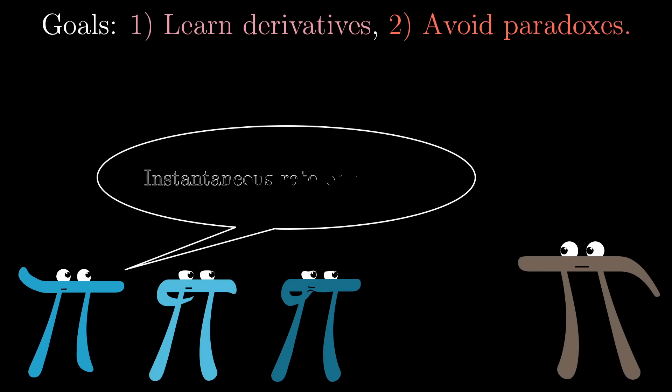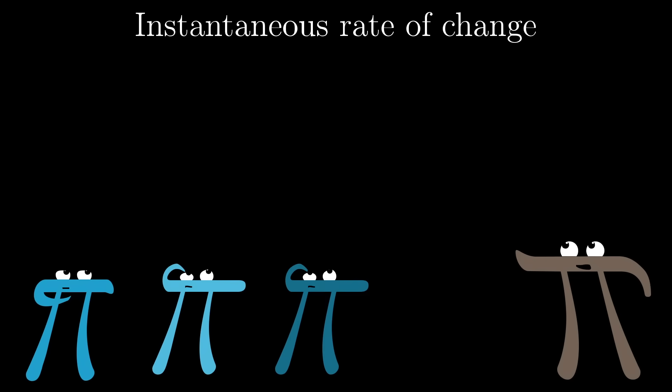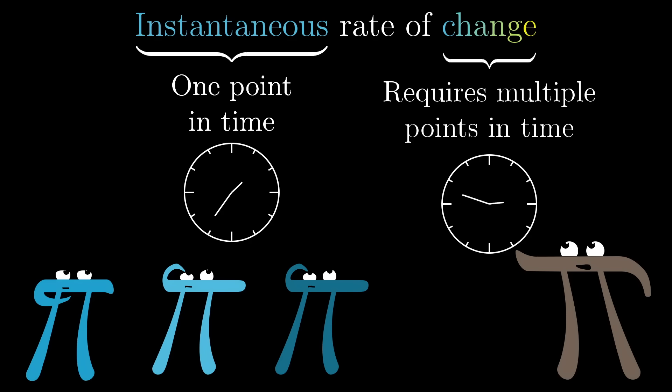You see, it's common for people to say that the derivative measures an instantaneous rate of change, but when you think about it, that phrase is actually an oxymoron. Change is something that happens between separate points in time, and when you blind yourself to all but just a single instant, there's not really any room for change.